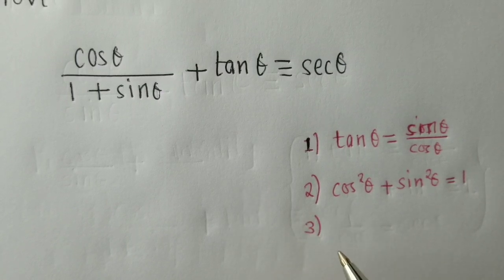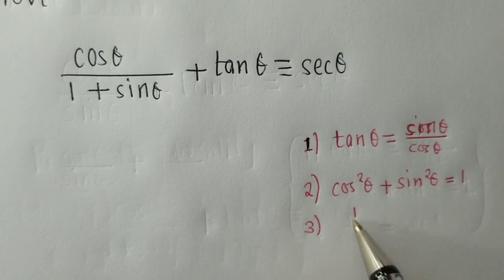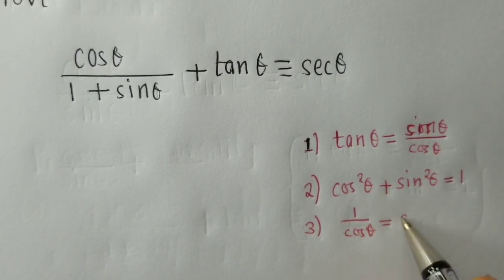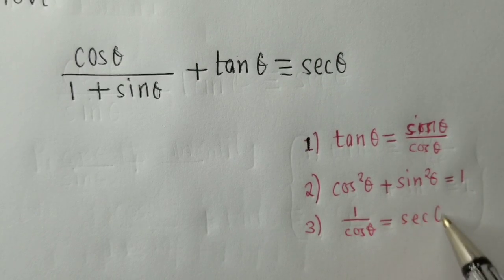Lastly, among the identities that we need to know is that 1 over cos theta is equal to sec theta.